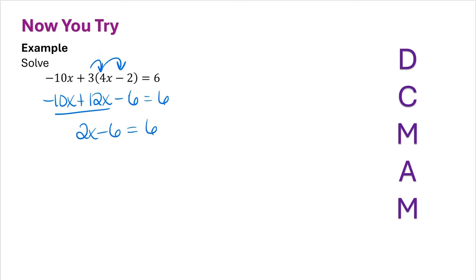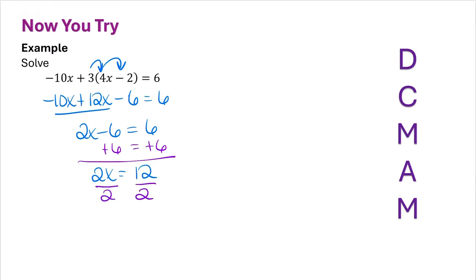Now I need to add or subtract to isolate the variable. Notice I didn't need the 'move' step for this problem — you don't always need to use every step. So I add 6 to both sides: 2x equals 6 plus 6, which is 12. Now I divide both sides by 2, giving me x equals 6. And that is my final answer.